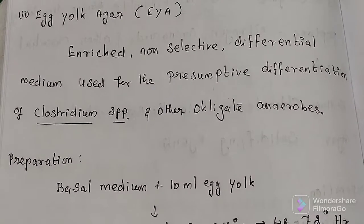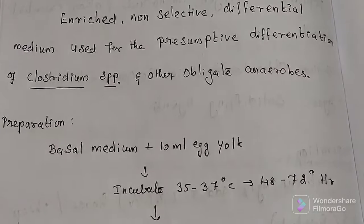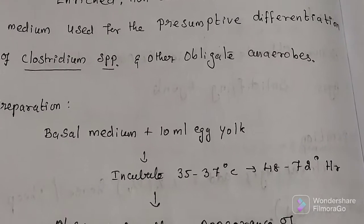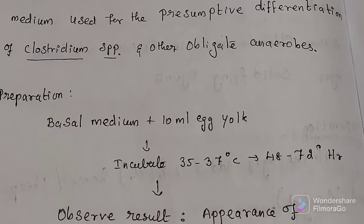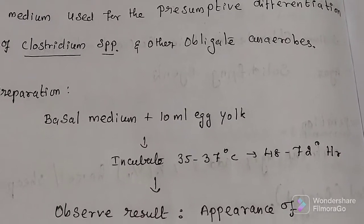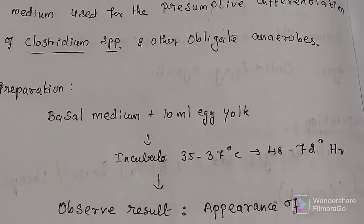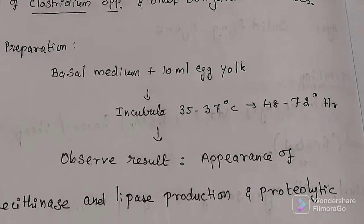How we will prepare that medium? Along with the basal medium, we will add 10 ml of egg yolk, then incubate at 35 to 37 degrees Celsius for 48 to 72 hours. After that, we will observe the result.